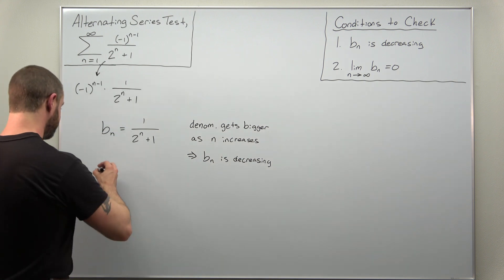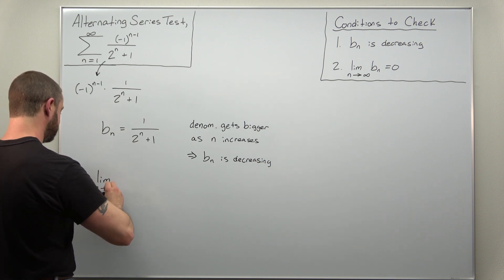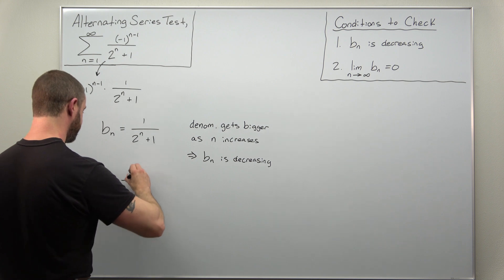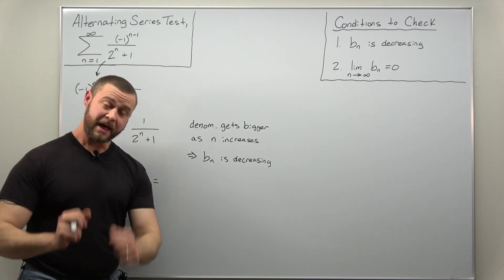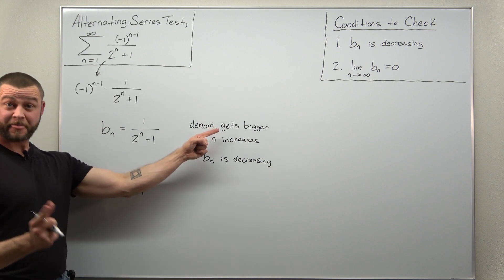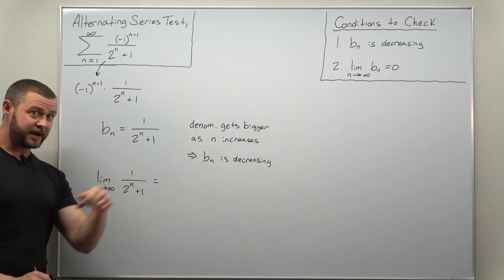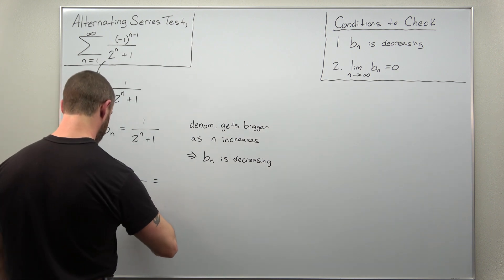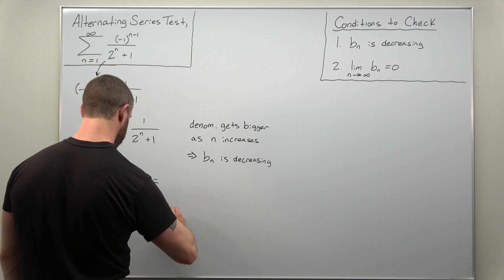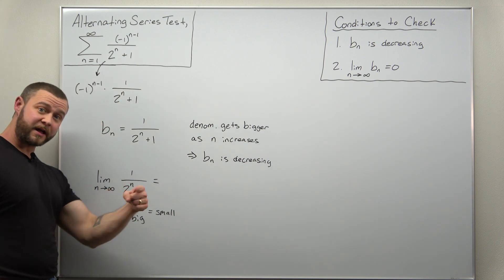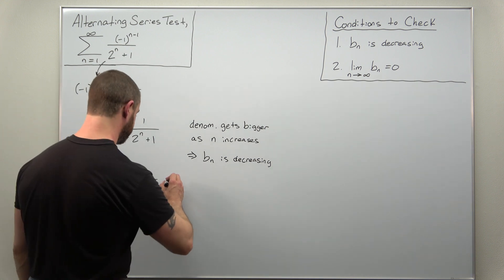The other thing we need to check is the limit of the term B sub n. So just take a quick limit as n approaches infinity. For pretty much the same reasons that this is decreasing, notice your denominator is getting bigger, and one over a big quantity is going to be small. As that denominator gets bigger, that fraction is going to get smaller and smaller, approaching zero.